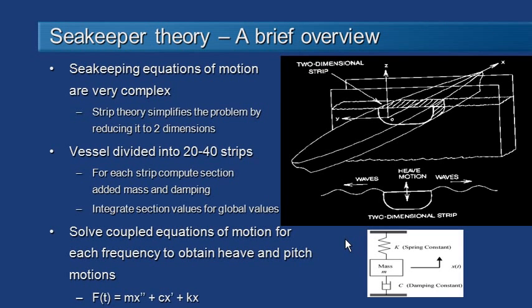It's worthwhile understanding a bit of the theory behind Sea Keeper. The basic equations of motions of a vessel are very complex and so we use strip theory to simplify the problem by dividing the vessel into strips and reducing it down to a 2D calculation problem. So here we see we've got a vessel with a transverse strip and then we can consider the different masses and forces and damping acting on that strip.